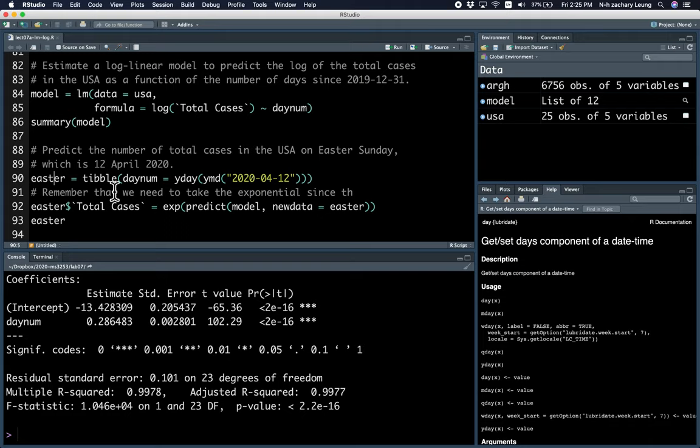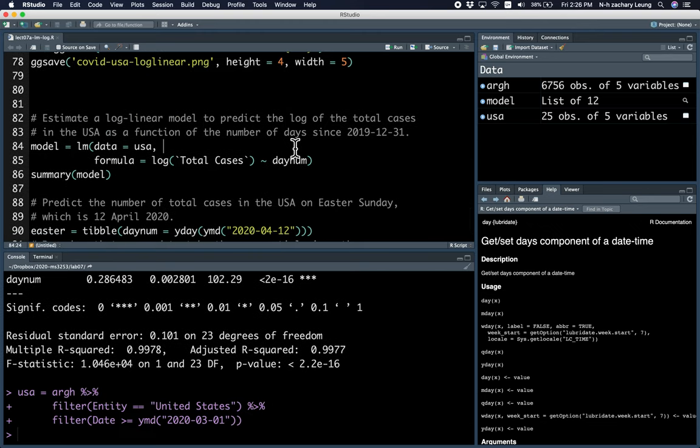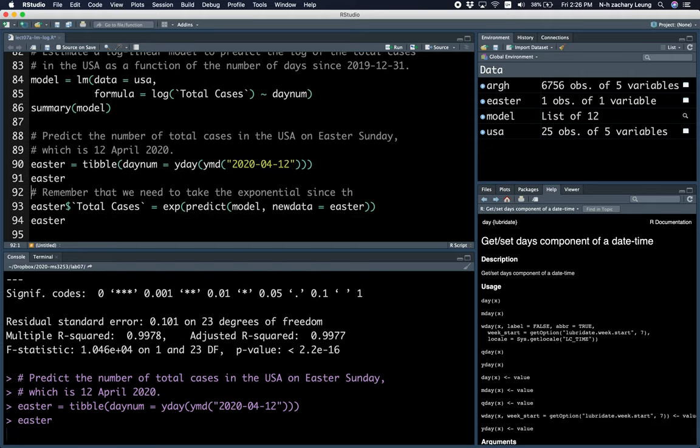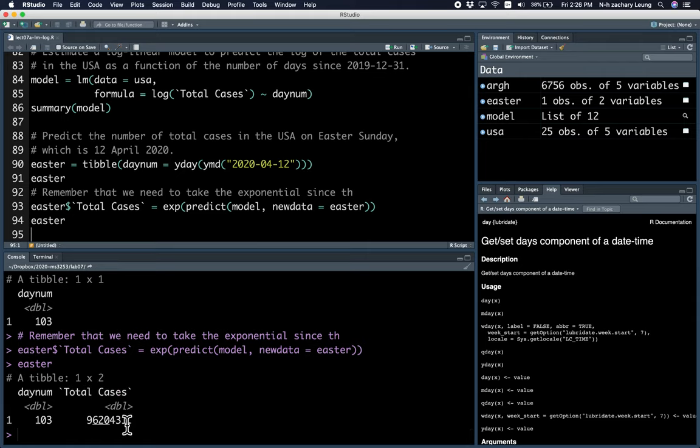And if you want to make a prediction, you have to create your new data frame. So I'll call it Easter, since the date is basically the 12th of April. And since I'm using the regression on day num, we have to create this day num variable. And when we do the prediction, we have to take an exponential of the prediction, and with the new data being the Easter data frame, and then that gives us what we want. So let me just run that, run the summary, and then create the Easter data frame, which looks like this. Do the prediction, and yes, so the total number of cases would be 9.6 million.